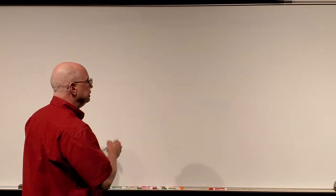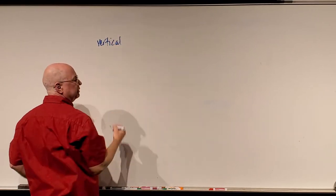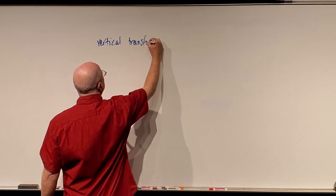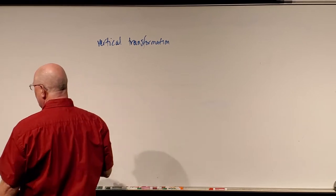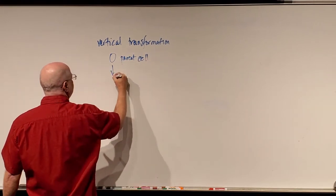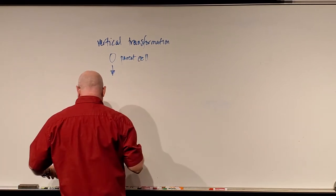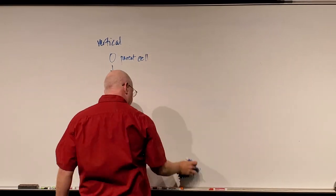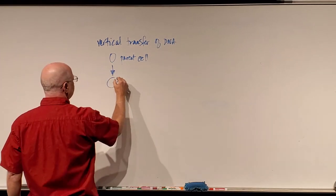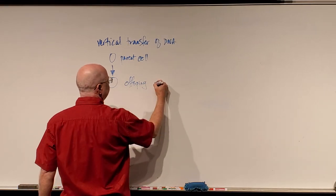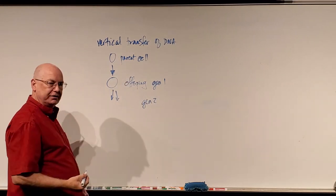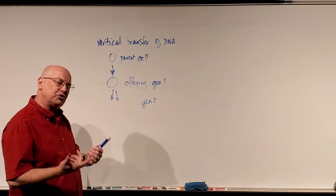There are two ways that genetic information can be transferred — usually DNA, unless we're talking about some viruses. There is vertical transfer of genetic information: you go from a parent cell and it transfers its genetic material to the offspring. So generation one divides and every generation after that carries that genetic information from parent to offspring. That's what we call vertical transfer of genetic information.